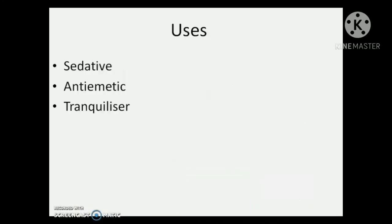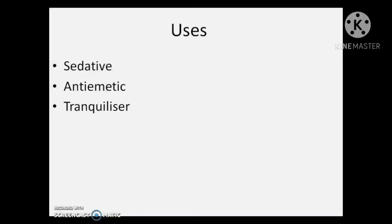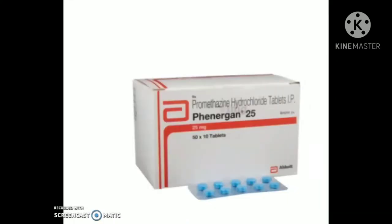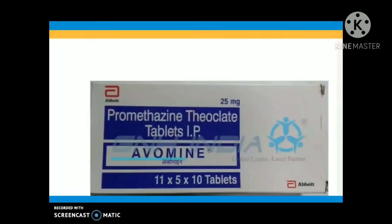The uses of Promethazine hydrochloride: it is an antihistaminic agent used in the treatment of various allergic reactions. It also has sedative and anti-emetic properties, so it is used in the treatment of motion sickness. It also has some local anesthetic and tranquilizing action — it produces drowsiness. Brand names include Promethazine hydrochloride (Phenergan) and Promethazine theoclate (Avomin).